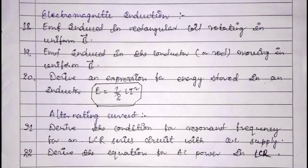In electromagnetic induction, the important derivations are: EMF induced in a rectangular coil rotating in a uniform magnetic field, EMF induced in a rod moving in a uniform magnetic field, derive the expression for energy stored in an inductor (E = ½LI²), derive the condition for resonant frequency for an LCR series circuit with AC supply, and derive the equation for AC power.